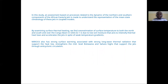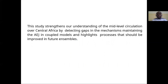In this study, an assessment based on processes related to the dynamics of the northern and southern components of the Africa East Allegiance is made to understand the representation of the mean-state climatology of this jet in coupled models. By examining surface thermal heating, we found overestimation of surface temperature to both the north and south of the Congo basin in GISS, due to low soil moisture that leads to intensified thermal heat lows and accelerates the jet despite weak temperature gradient. In MIROC6, which also has very strong surface heating, this is associated with strong longwave thermal radiation supporting the heat low, and mid-level Botswana and Saharan highs that support the jet through anti-cyclonic circulation. This study extends our understanding of mid-level circulation over Central Africa by detecting gaps in the mechanisms maintaining the African easterly jet in coupled models and highlights processes that should be improved in the future.